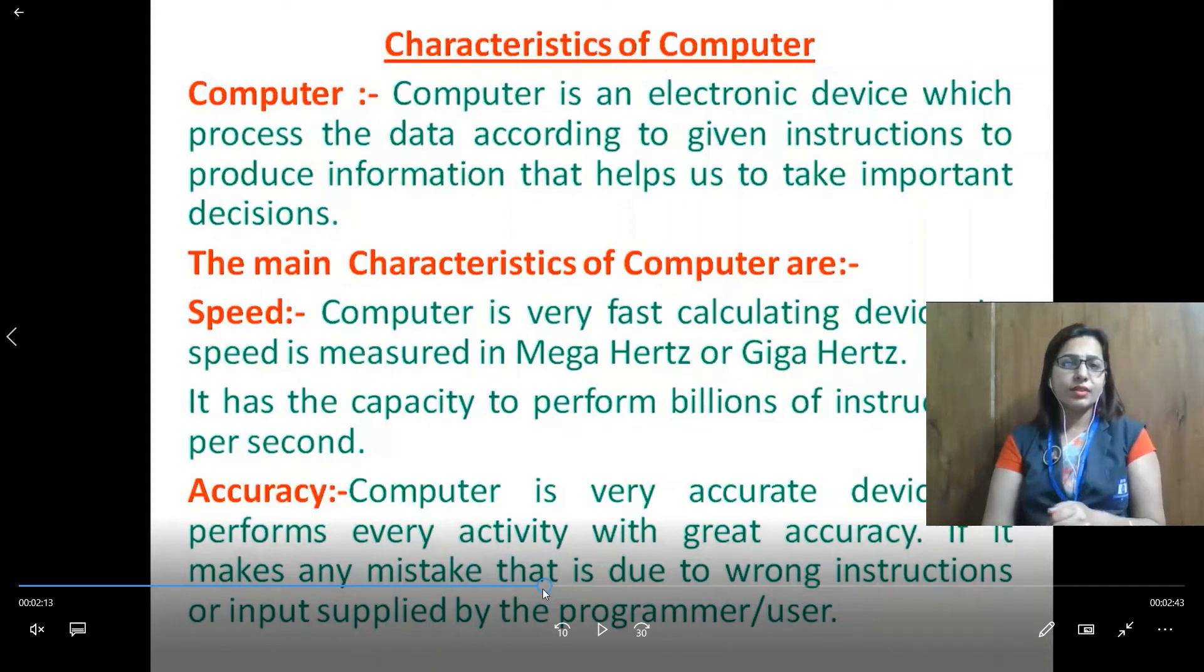Next is characteristics of computer system. There are many characteristics of computer system. These are accurate. Computer speed is very fast. Storage capacity is very huge and it can perform multiple tasks at a time. We can call it multitasking. Computers are multitasking and it reduces the paper work.